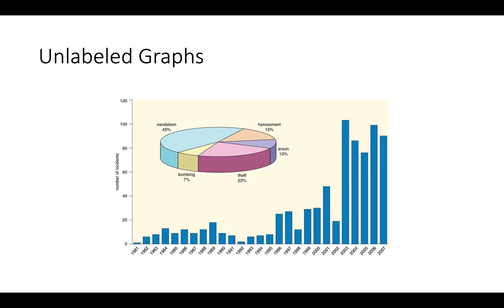The last graph is about something unlabeled — it mentions vandalism and harassment, but we're not sure where this is, what the numbers represent, or who they're talking about. You should always label your graphs: say what the data is, where it came from, how you found it, and what each axis represents. These are just some of the things to watch out for with misleading graphs — things people do both intentionally and accidentally in how they display data.